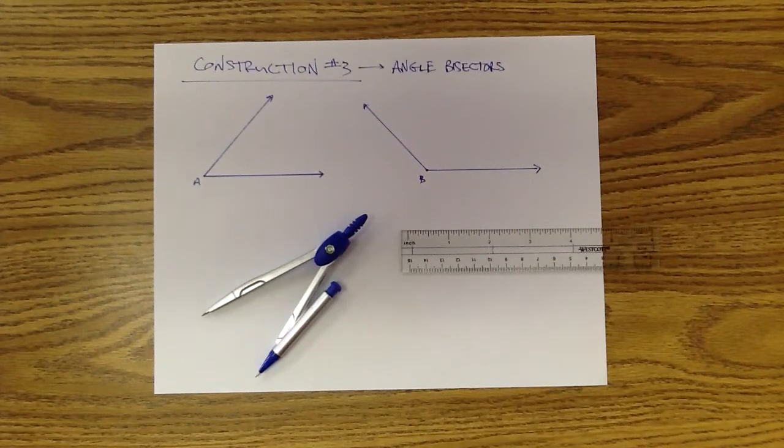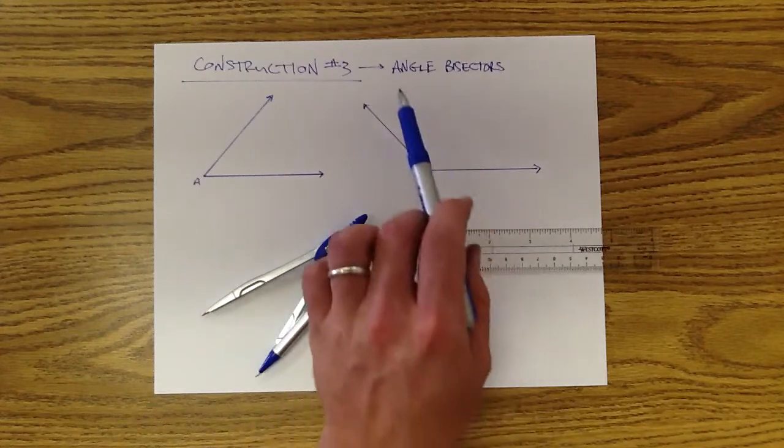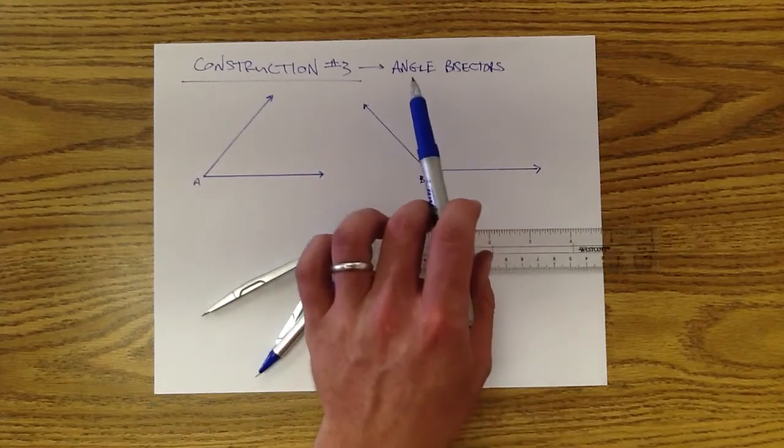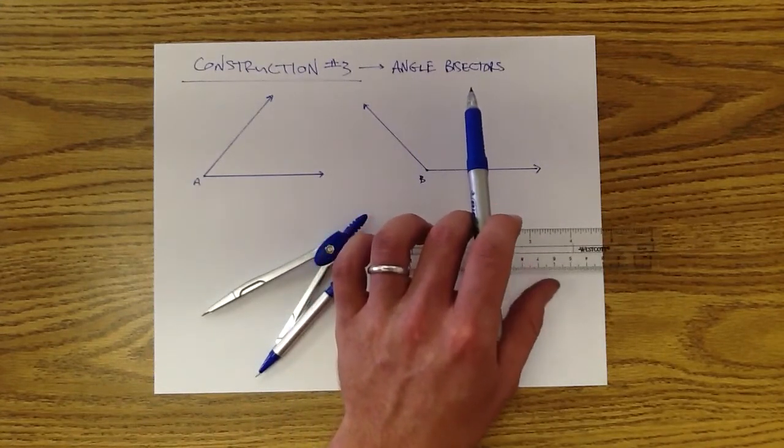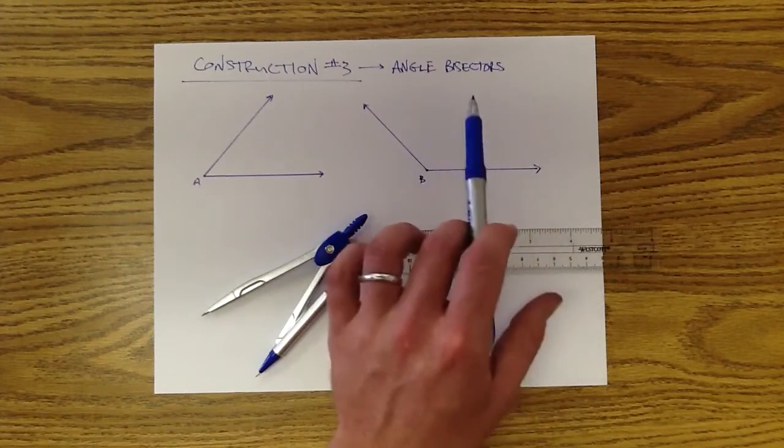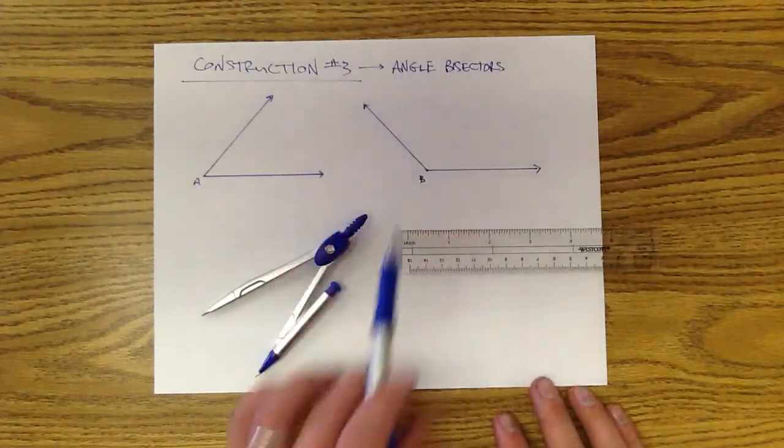The third type of construction we're working with is dealing with angle bisectors. If you hear the term bisect, the first thing you should think is we're going to cut something in half. And what are we cutting in half? We're cutting in half an angle.